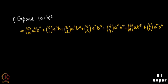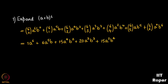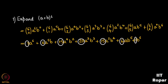After simplifying all the combinations — 6C0, 6C1, 6C2, etc. — we get: a^6 + 6a^5·b + 15a^4·b² + 20a³·b³ + 15a²·b^4 + 6a·b^5 + b^6. As you can see, the coefficients increase to a maximum and then decrease symmetrically. This was the expansion of (a + b)^6.